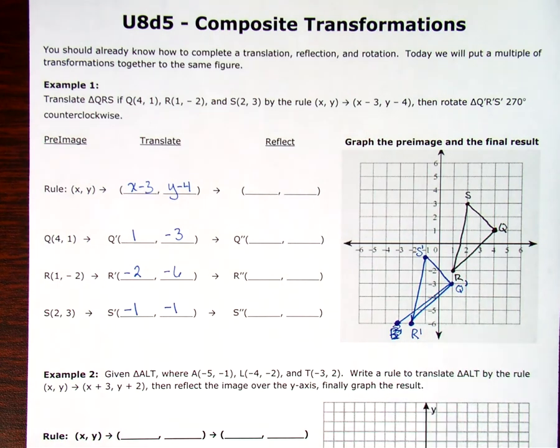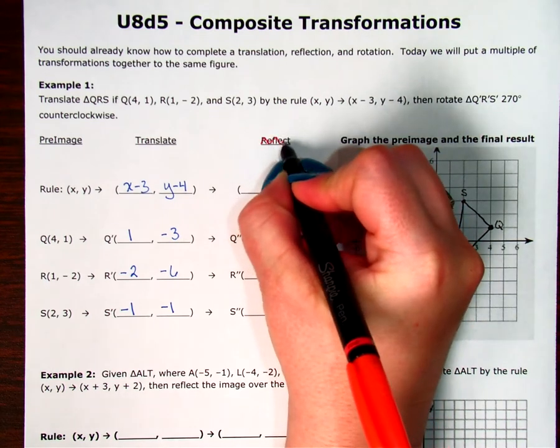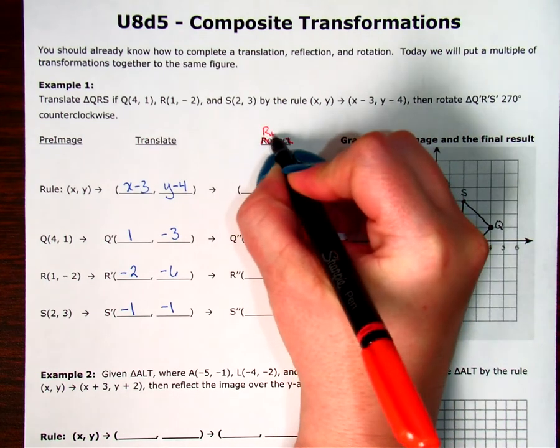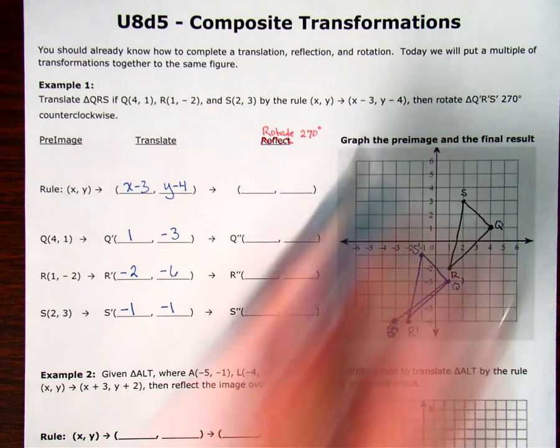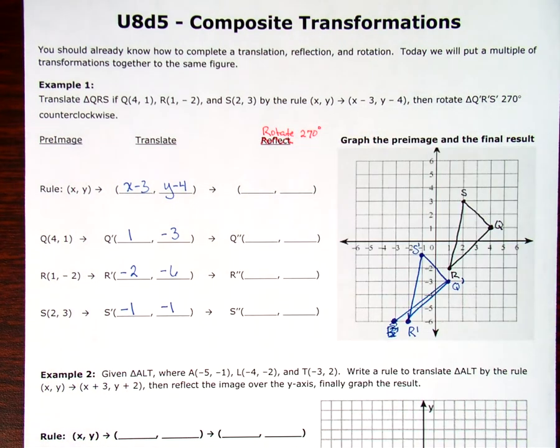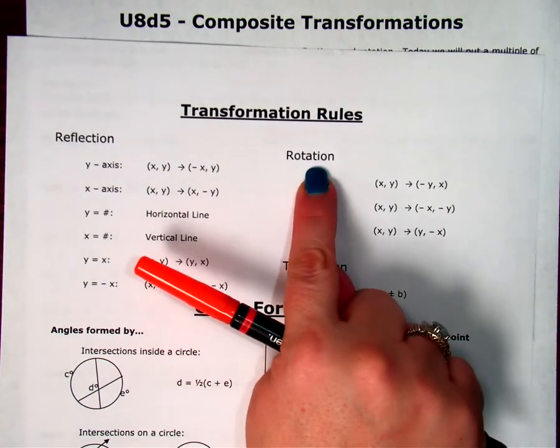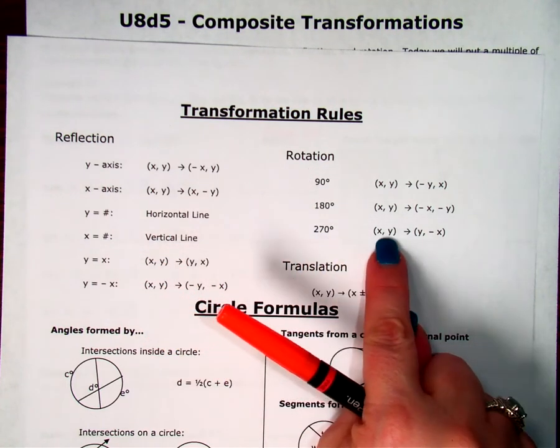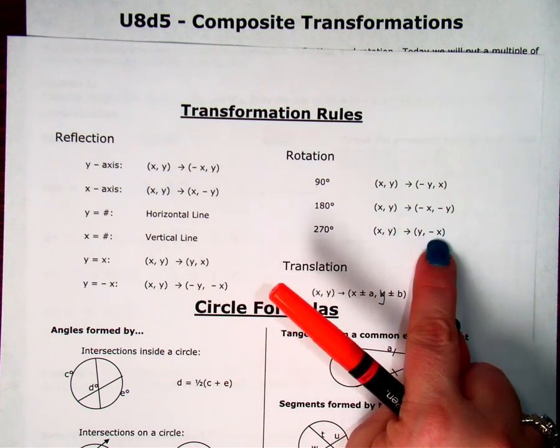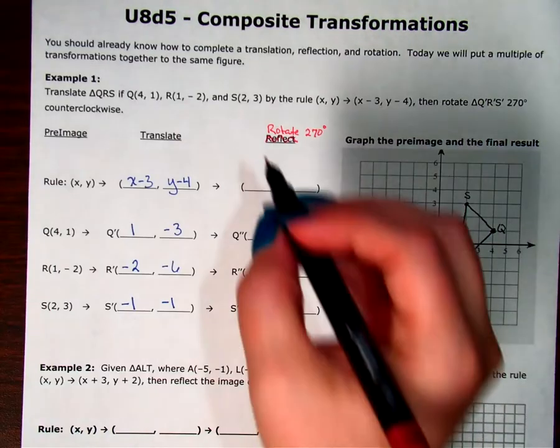Alright. So, then, now, it says we're going to, it says here reflect. But, my directions say we're going to, not reflect, but rotate. 270 degrees. So, I don't remember those rules. I'm going to look at my rotation, or my transformation rules. And I'm going to say, okay, if I want to rotate 270 degrees, my (x, y) point is going to become (y, opposite of x). Remember, we don't say negative x. Y, the opposite of x.